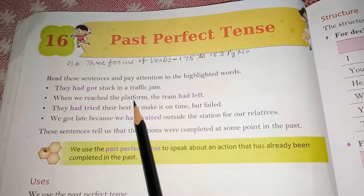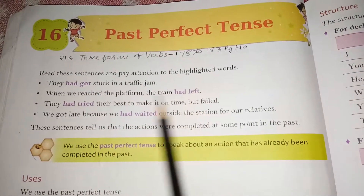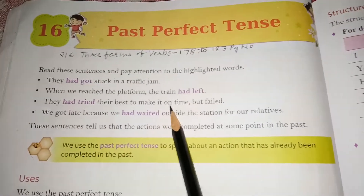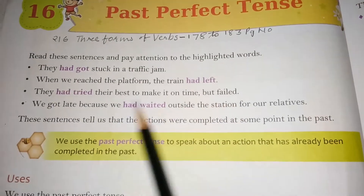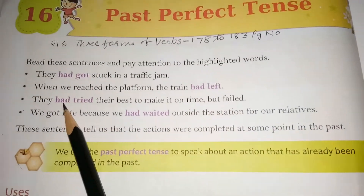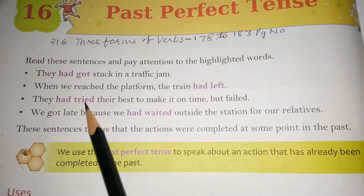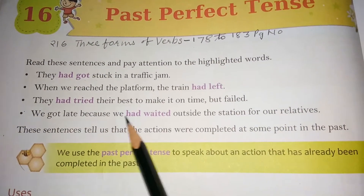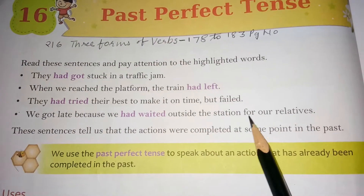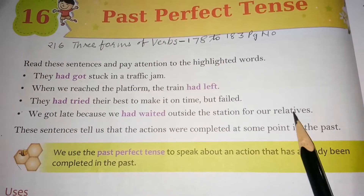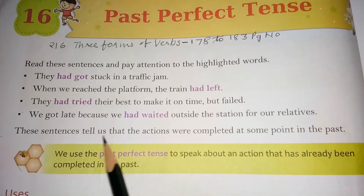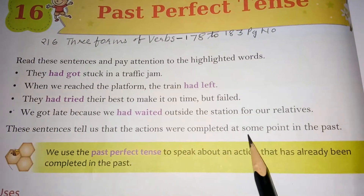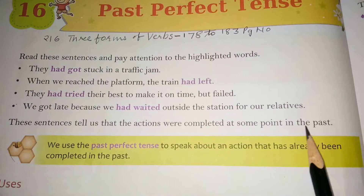When we reached the platform, the train had left. They had tried their best to make it on time but failed — 'had' is the helping verb and 'tried' is the third form of verb. We got late because we had waited outside the station for our relatives. These sentences tell us that the actions were completed at some point in the past.